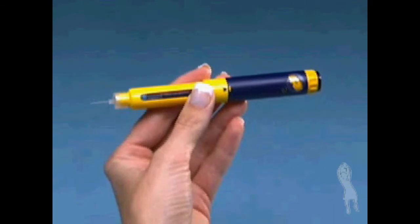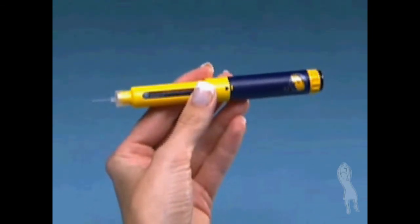Your Follistim AQ cartridge will contain either 300, 600 or 900 units.